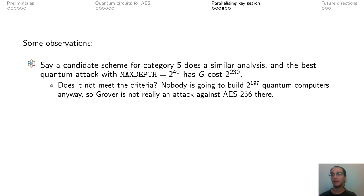In some sense, no. But then maybe what these numbers are telling us is that there exists no quantum attack against AES 256. And maybe also the numbers from this hypothetical category 5 candidate say that no attack exists, and hence maybe it is in category 5.